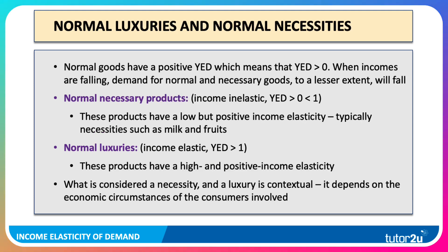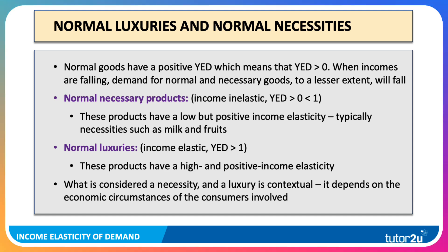Normal goods have a YED greater than zero. For normal necessities the income elasticity is greater than zero but less than one — think milk, vegetables, fruit in the supermarkets, cereals for example. Whereas luxuries have a higher positive income elasticity of greater than one. However, what is considered a necessity and a luxury must be contextual; it depends on the economic circumstances and financial circumstances of the people involved.